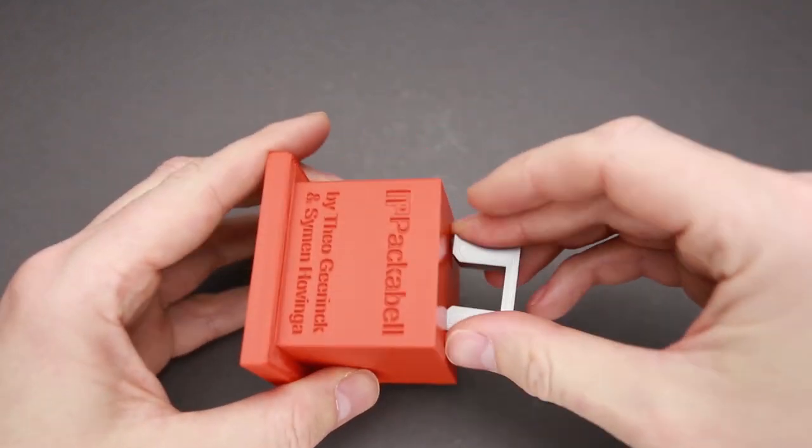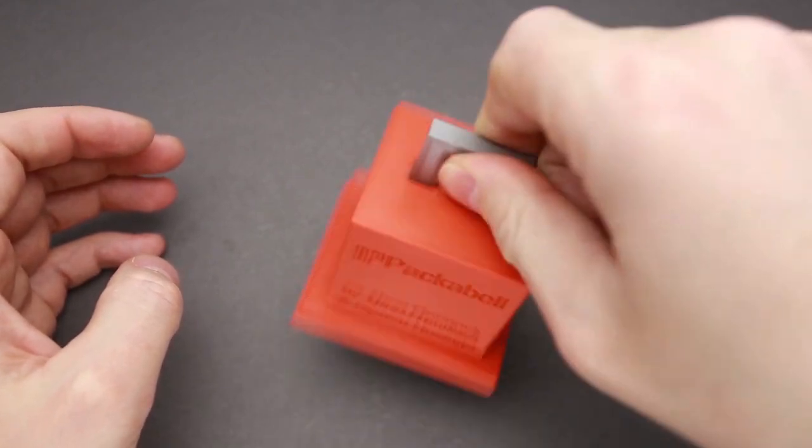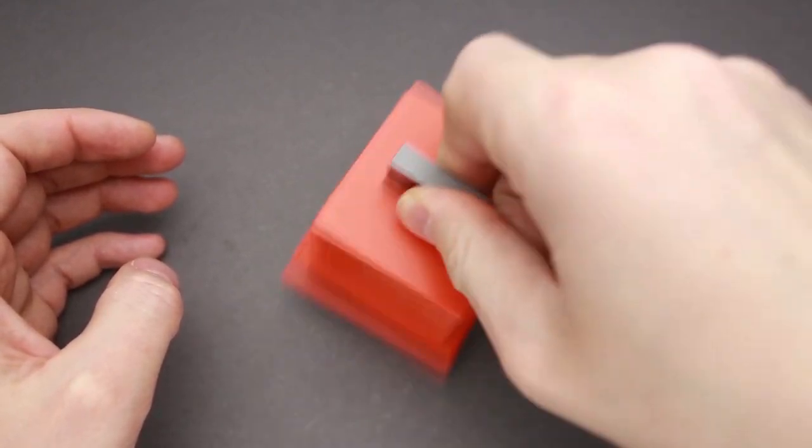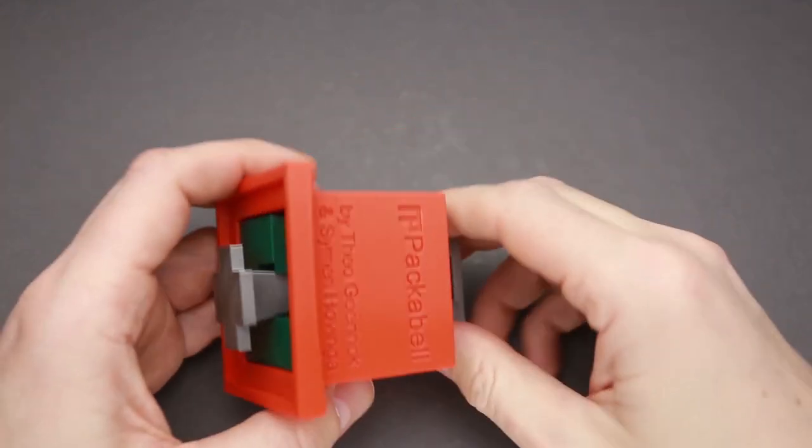And then you move the clapper and all the parts stay inside when you flip the bell upside down. As you can see, I can even put the handle and do a little bit of bell noise, but it sounds plastic.